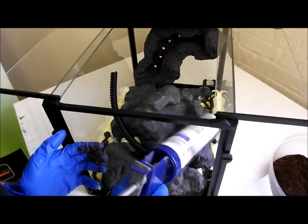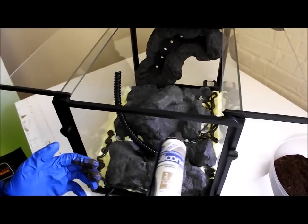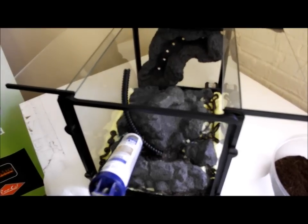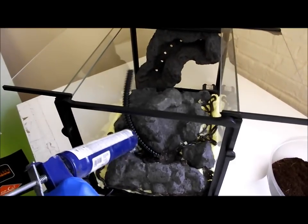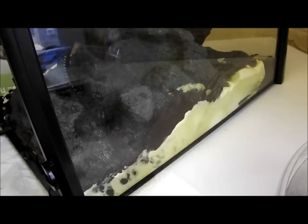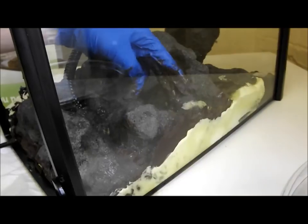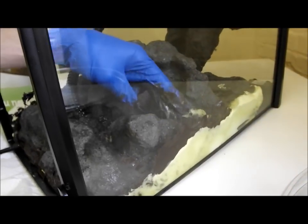For larger backgrounds, you may want to finish maybe a quarter to half the background, cover it with coconut fiber, and then proceed so the silicone doesn't dry before you have a chance to add your substrate. Don't worry about any silicone that's smeared on the glass. This can easily be removed with a razor blade after the silicone is dried.